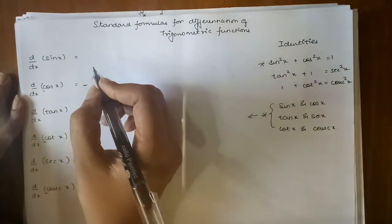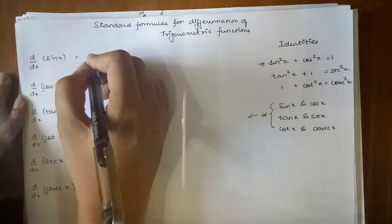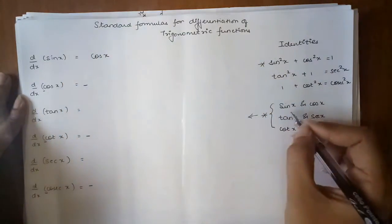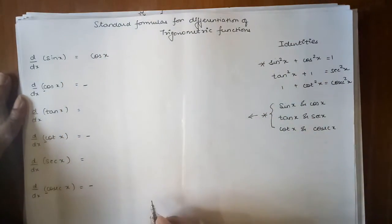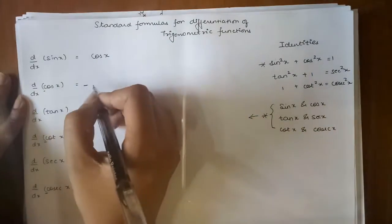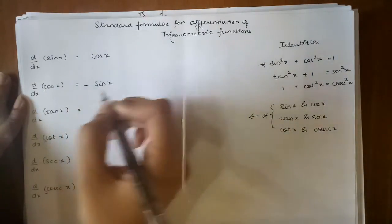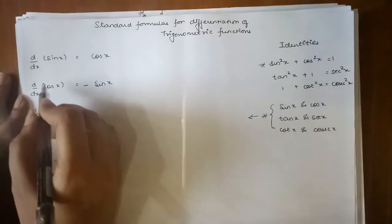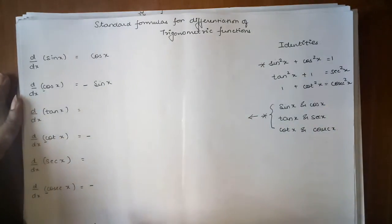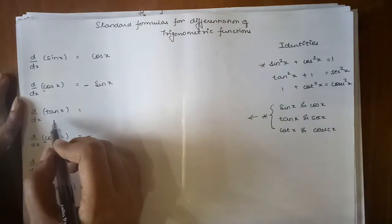Let's start with a very easy one: differentiation of sin x gives us cos x. As we can see there is a relation between sin x and cos x. Similarly, differentiation of cos x will give us minus sin x, because cos x starts with the letter C.